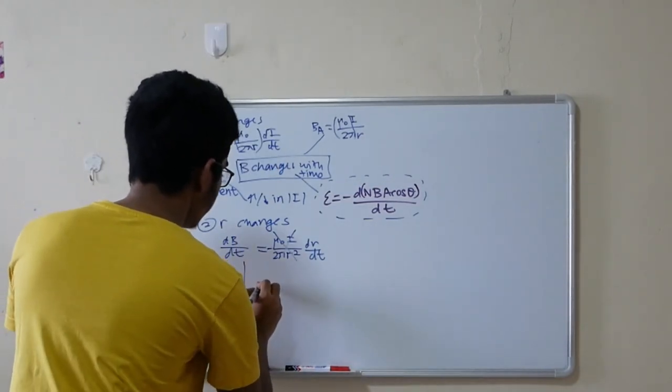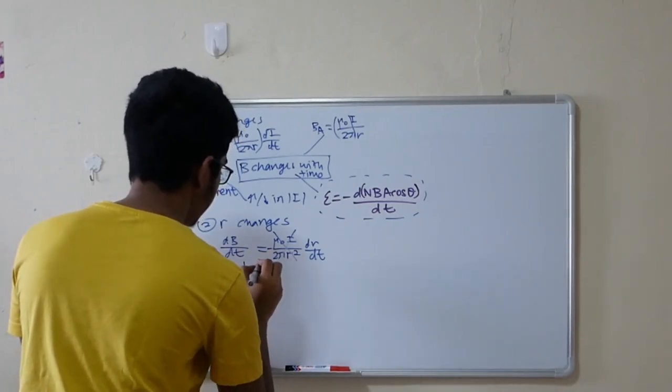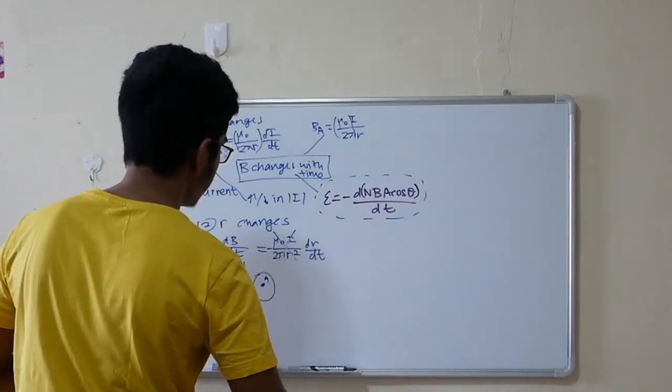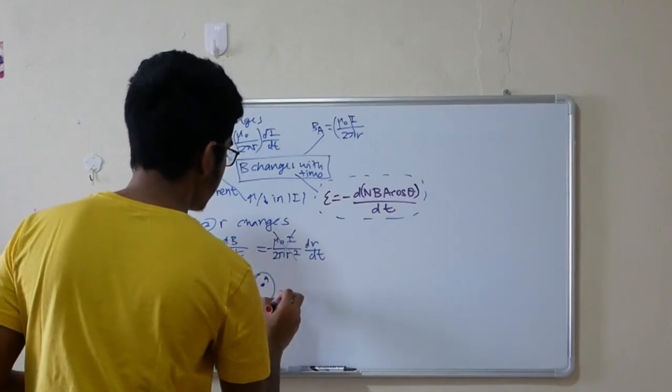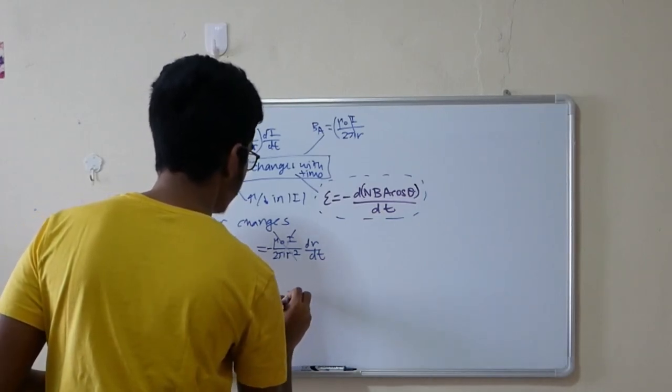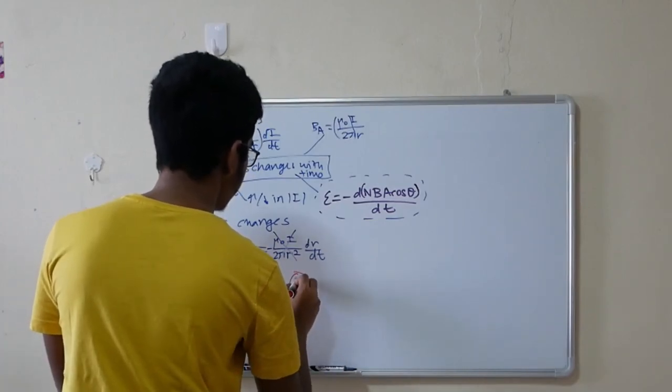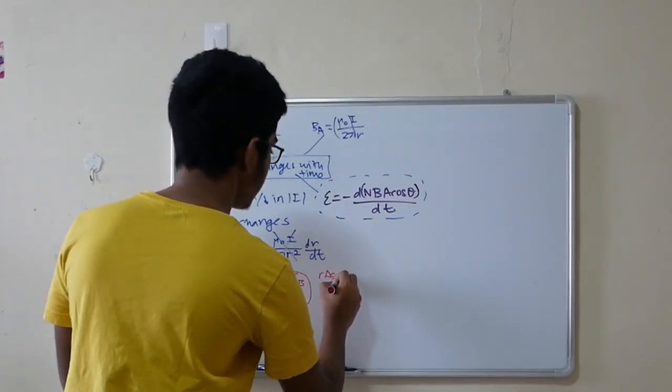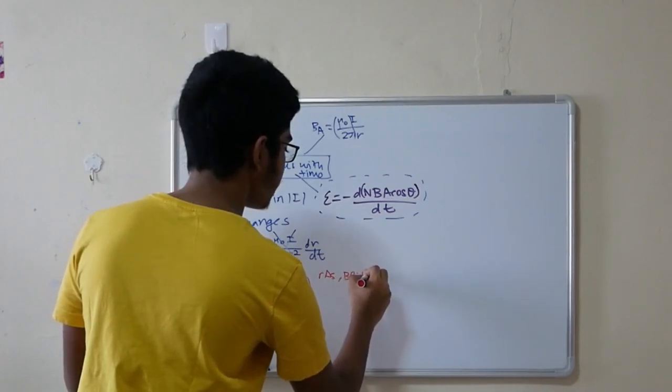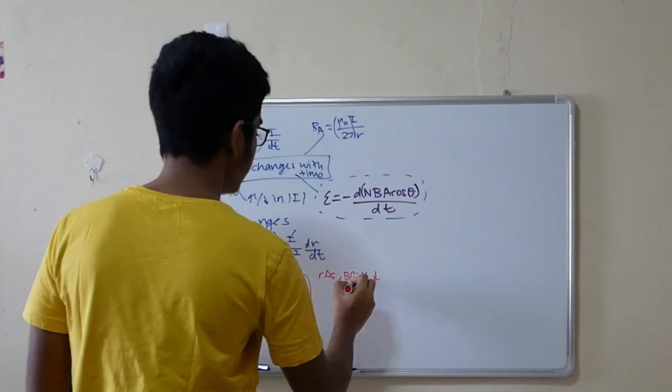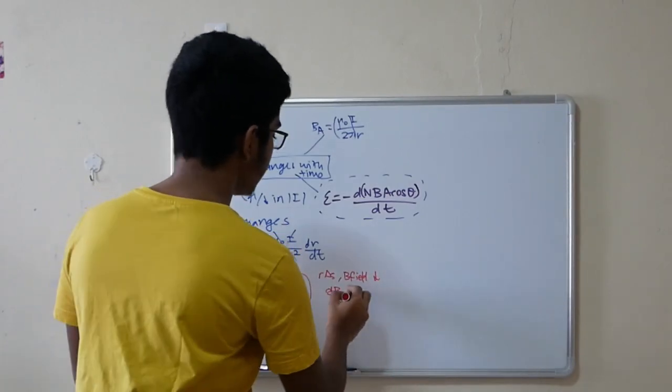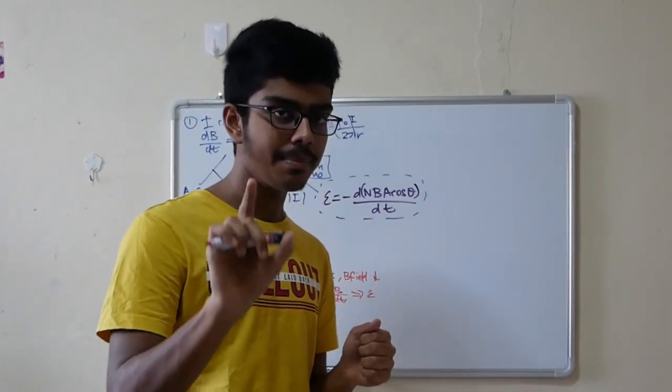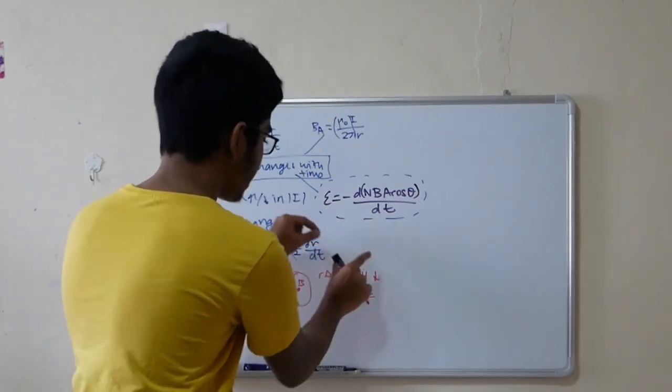So how does the R change? For example, there's a coil that is placed at this point A, the center of the coil. Current is flowing through this long straight conductor. Now, this coil is moved away. So the distance is R1, now it's moved to a distance of R2. So it moves this way. R changes, right? So if R changes, the B field weakens, it becomes weaker. So dB over dt has a value, there's a change. Thus, it gives rise to your EMF. Note this flow of logic.